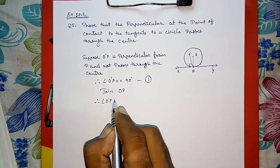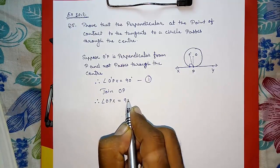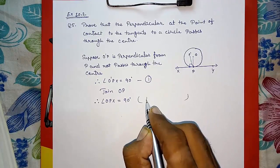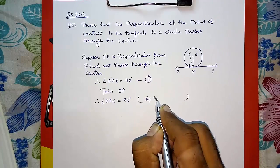If I join this, then I will get angle O P X also equals 90 degrees. How? Why? By theorem 10.1.